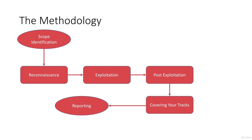In the first particular case we're going to start with scope identification, moving down to reconnaissance to gather more information. Then we're going to exploit the target — so now we've got access to the machine. We're going to do some post-exploitation, stuff like moving up to administrator or root. Second to last is covering your tracks, which may or may not be required depending on the engagement. And then the final step is reporting, which should always be there.